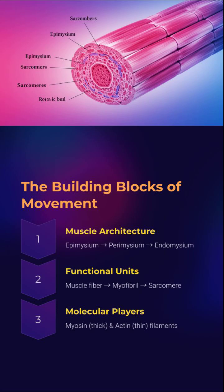Each muscle is structured for precision. Wrapped in epimysium, perimysium, and endomysium, muscle fibers contain myofibrils built of sarcomeres — the fundamental units of contraction. Zoom in further and you'll see actin and myosin, the molecular players behind every contraction.